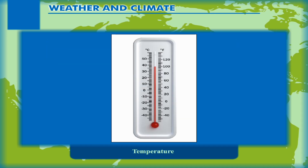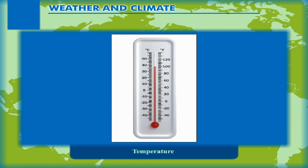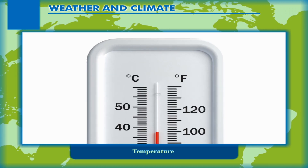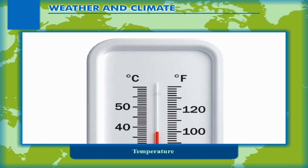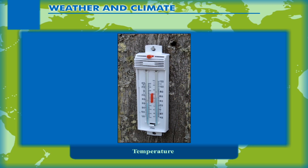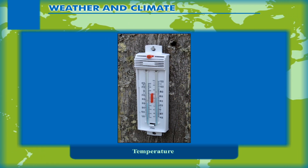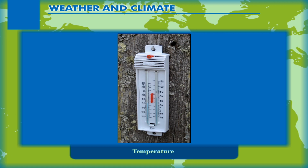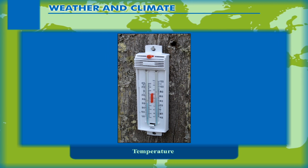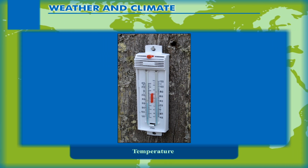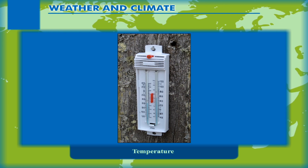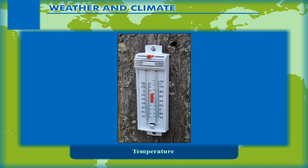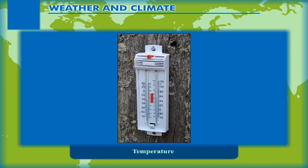The temperature is recorded by using a thermometer. The thermometer may have a Celsius or a Fahrenheit scale. The atmospheric temperature is measured by using a Celsius maximum and minimum thermometer. As evident from its name, it can record both the maximum as well as minimum temperature during the day.